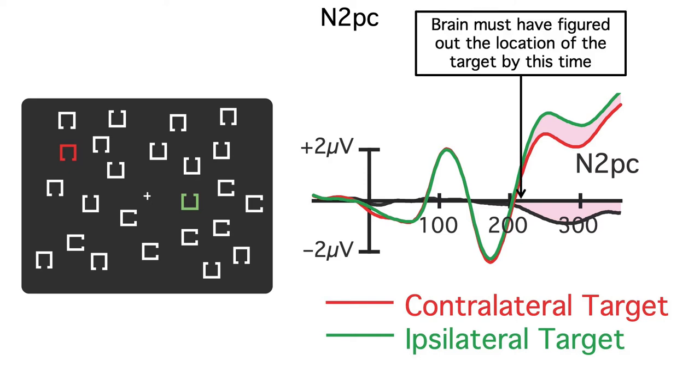If you look at a contra minus ipsi difference wave, you can know that the brain has localized the target by the time the difference wave deviates from zero. And if the onset time of the difference wave is later in one condition than in another, or in one group than another, you can conclude that this reflects a difference in the time required to find the target and shift attention to it.